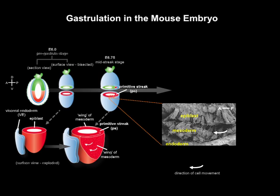Prior to the initiation of gastrulation, the mouse embryo comprises a bilaminar, cup-shaped structure consisting of visceral endoderm, shown here in blue, which encapsulates the extraembryonic ectoderm, shown here in green, proximally, and the pluripotent epiblast, distally, shown here in red. At gastrulation, cells that will form the mesoderm and definitive endoderm ingress through the primitive streak, a morphologically distinct structure which marks the posterior end of the embryo, shown here on the right.